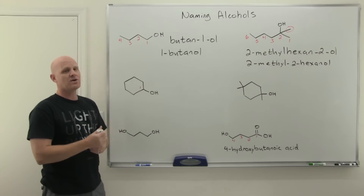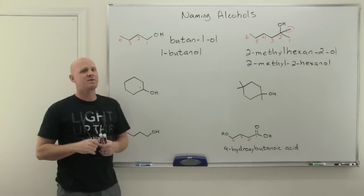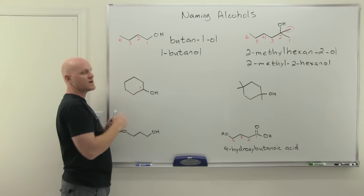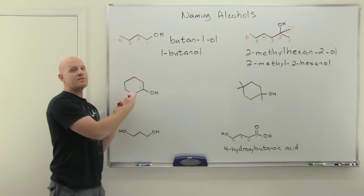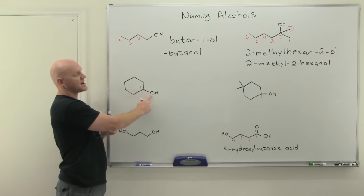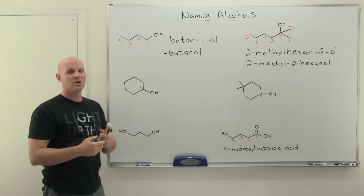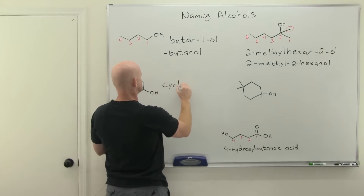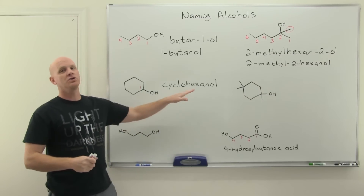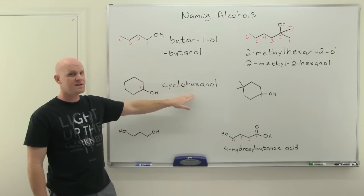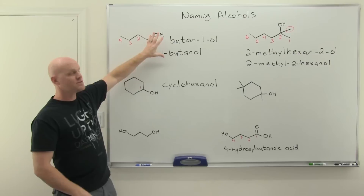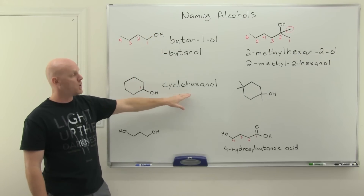For cyclic alcohols, as long as you're naming the alcohol as part of the parent chain because it's the highest priority functional group, you do not include the position number — the OH is at position one by default on a ring. Whether you number clockwise or counterclockwise is arbitrary if there are no other substituents. So for a six-membered ring with an OH, the parent chain is cyclohexane and this is simply cyclohexanol — not 1-cyclohexanol or cyclohexan-1-ol. On linear alcohols you must include the number, but on cyclic alcohols you omit it.